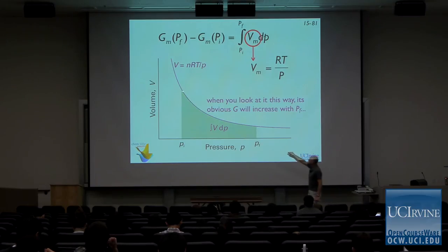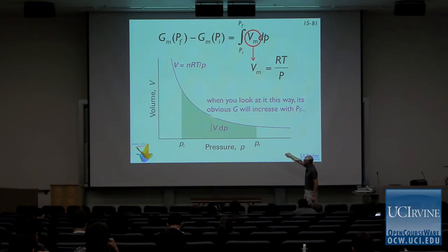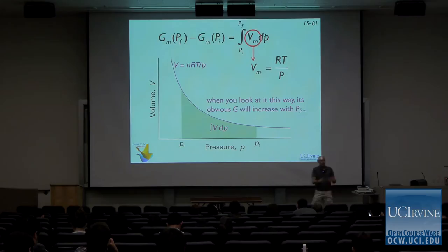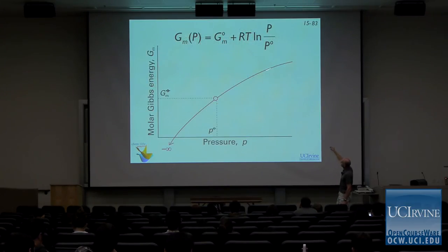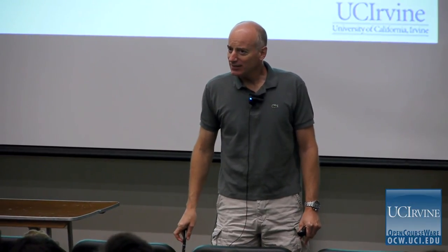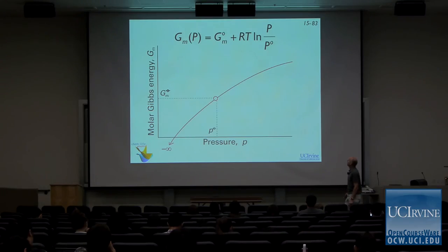The curve has downward curvature because at low pressures there's a big change in Gibbs energy per unit pressure, then smaller and smaller changes — that's why there's downward curvature. So the Gibbs energy goes down as we increase the temperature and up as we increase the pressure.